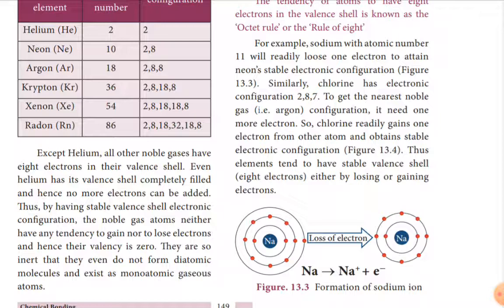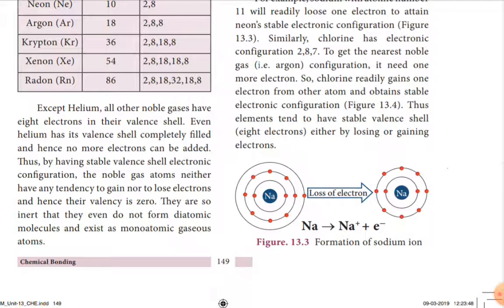Except helium, all other noble gases have 8 electrons in the valence shell. Even helium has its valence shell completely filled, so no more electrons can be added. Thus, by having a stable valence shell electronic configuration, noble gas atoms have no tendency to gain or lose electrons, and hence their valence is zero. They are so inert that they do not even form diatomic molecules and exist as monoatomic gases.